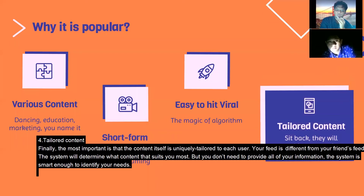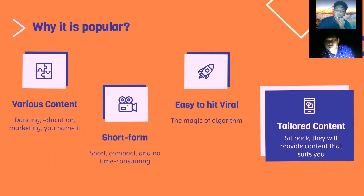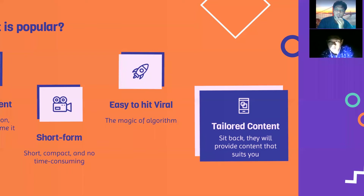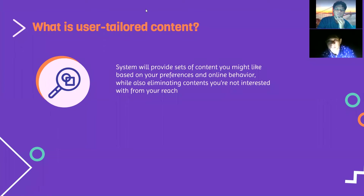The most important factor is user tailored content. Your feed is different from your friends' feed. The system determines what content suits you most, and you don't need to provide all of your information — the system is smart enough to identify your needs.